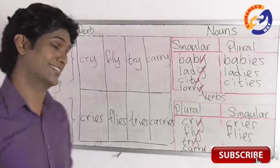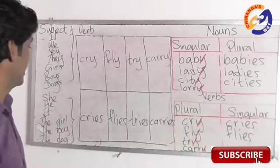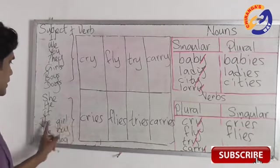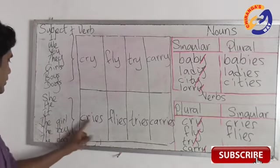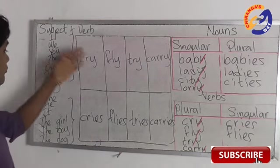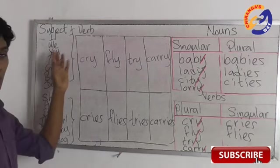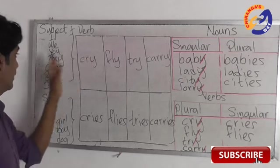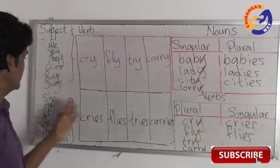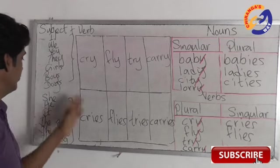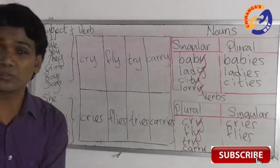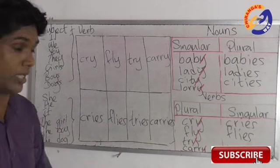When the subject is singular, make the verb singular by adding 'ies': she cries, he cries, it cries, a girl cries, the boy cries, the dog cries. Similarly: she flies, he flies, it flies, the girl flies, the boy flies, the dog flies.